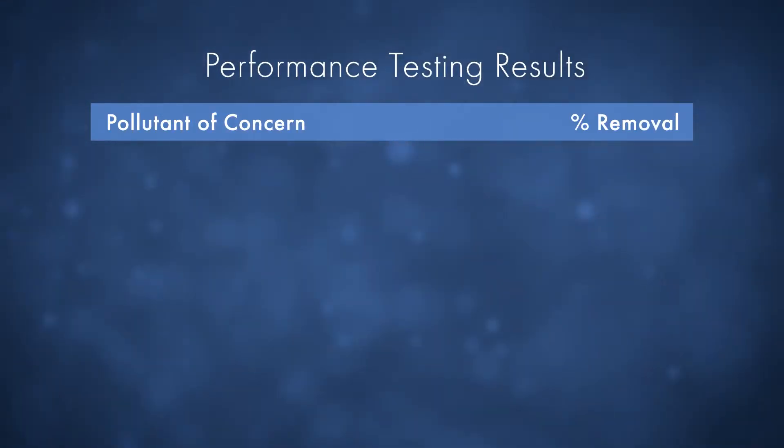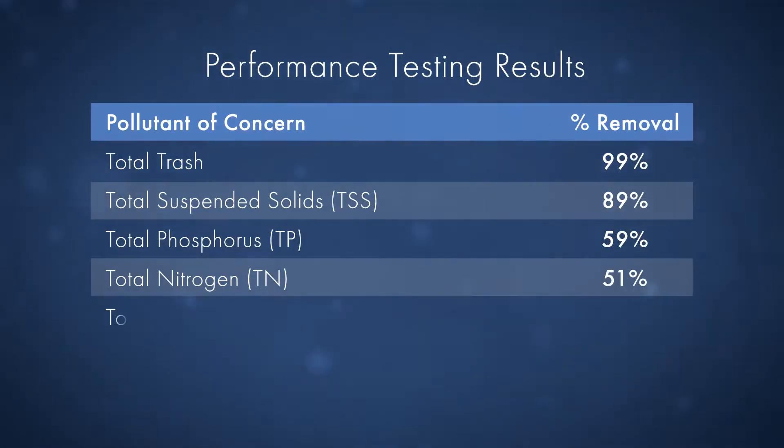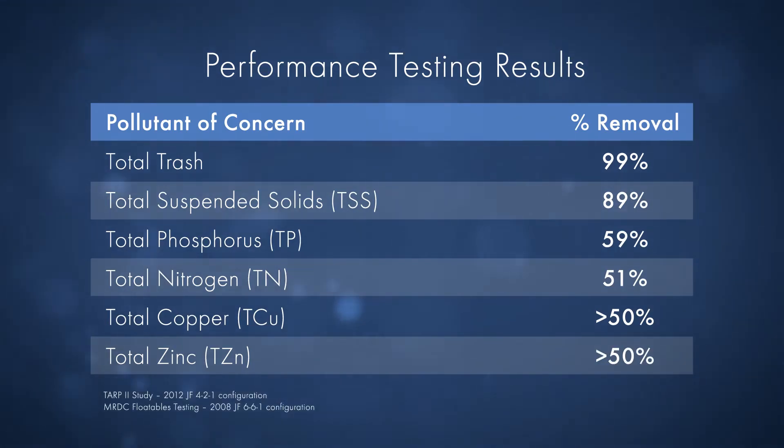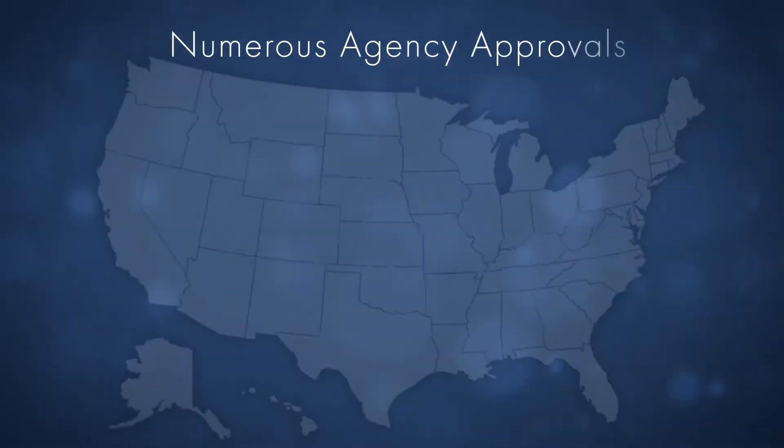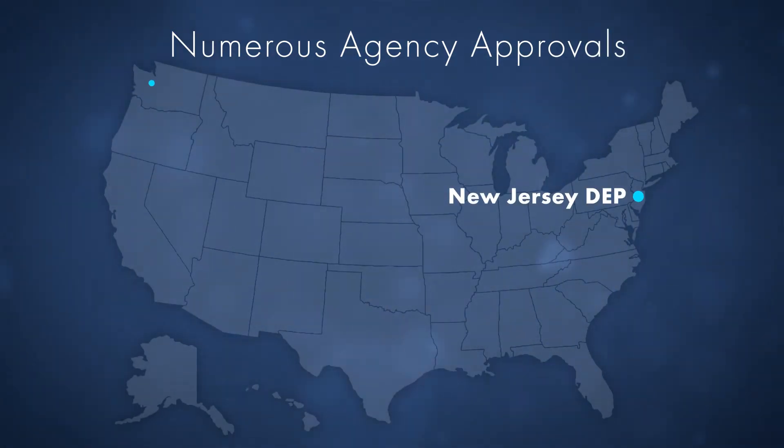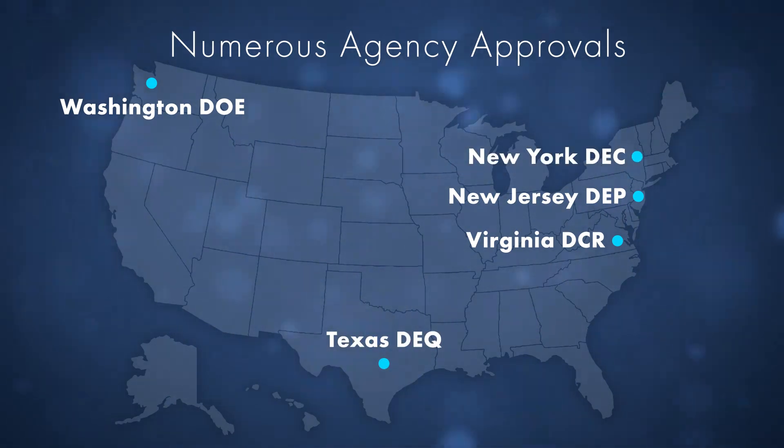Third-party field testing for the Jellyfish Filter has been conducted following the TARP Tier 2 protocol. The Jellyfish Filter has achieved numerous agency approvals including New Jersey Department of Environmental Protection Final Certification and Washington State Department of Ecology Conditional Use Level Designation.